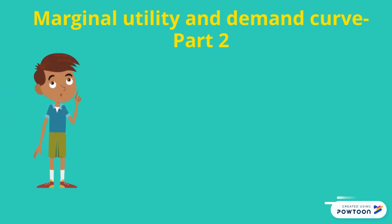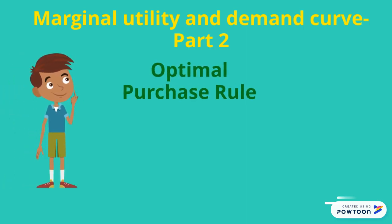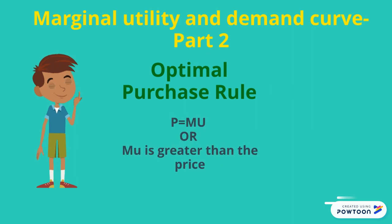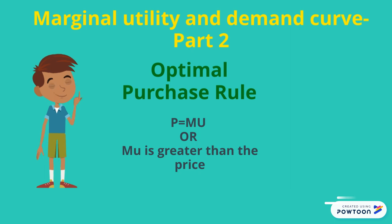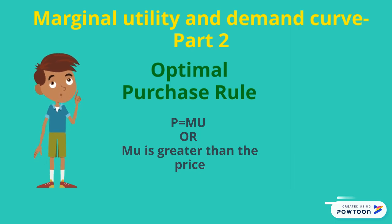According to the optimal patches rule, people will buy a product as long as its marginal utility exceeds or is equal to its price. If the MU is less than the price, then it's not worth buying.